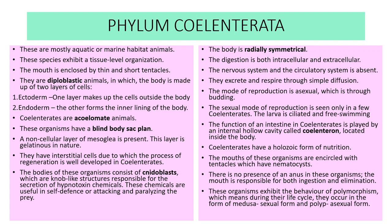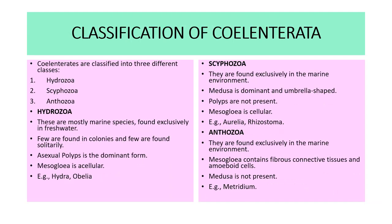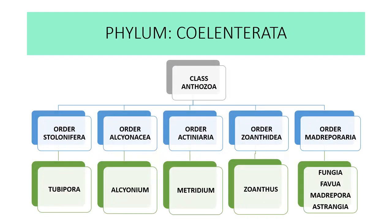The coelentrates show two important forms. One is the asexual form known as polyp, and the second is medusa, which is the sexual form. Now we will start with the Anthozoa. The Anthozoa are exclusively marine organisms and are divided into different orders.